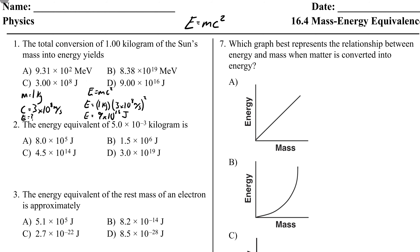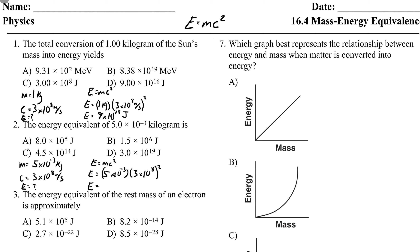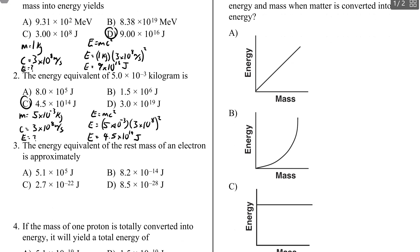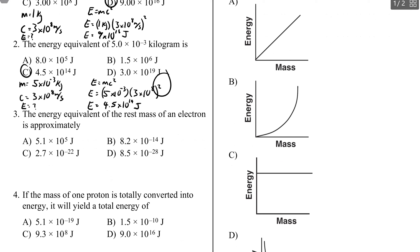Number two: the energy equivalent of 5 times 10 to the negative 3 kilograms. Our unknown is energy again. Using E equals MC squared and substituting in our values, you get 4.5 times 10 to the 14 joules — choice C. Don't forget to square C; the speed of light in a vacuum is a huge number, and you still have to square it.